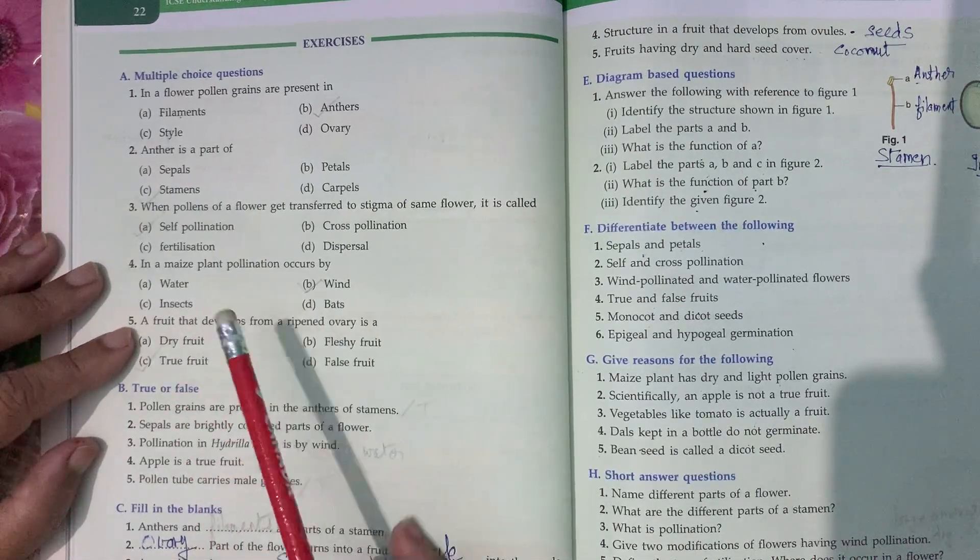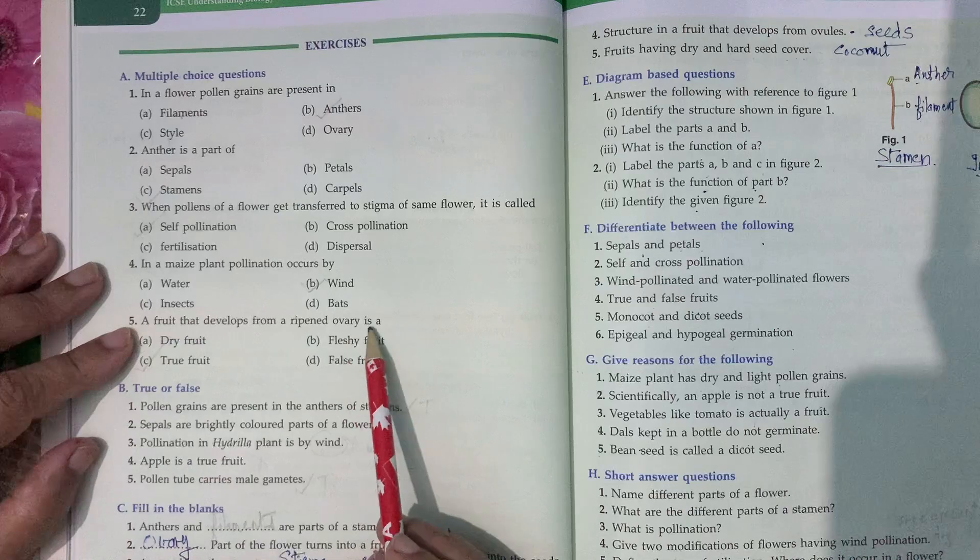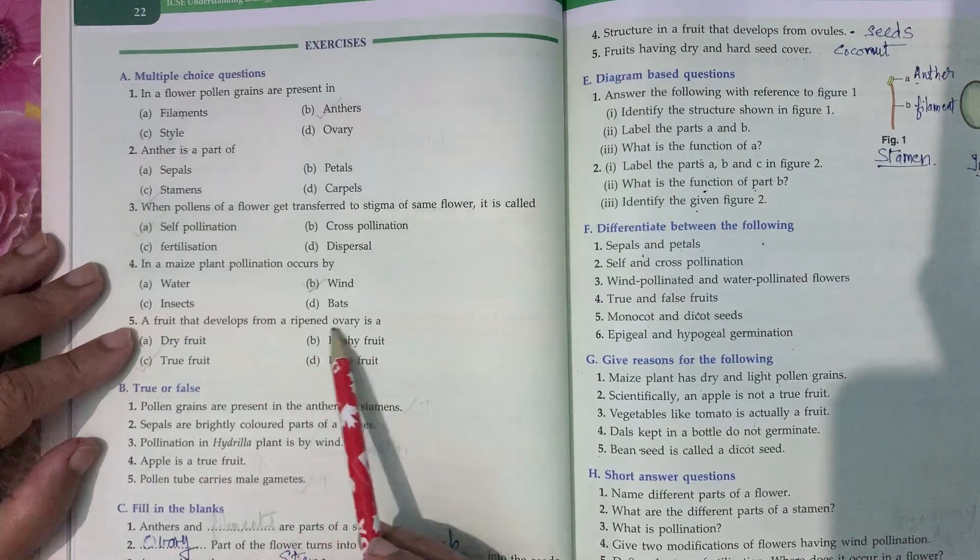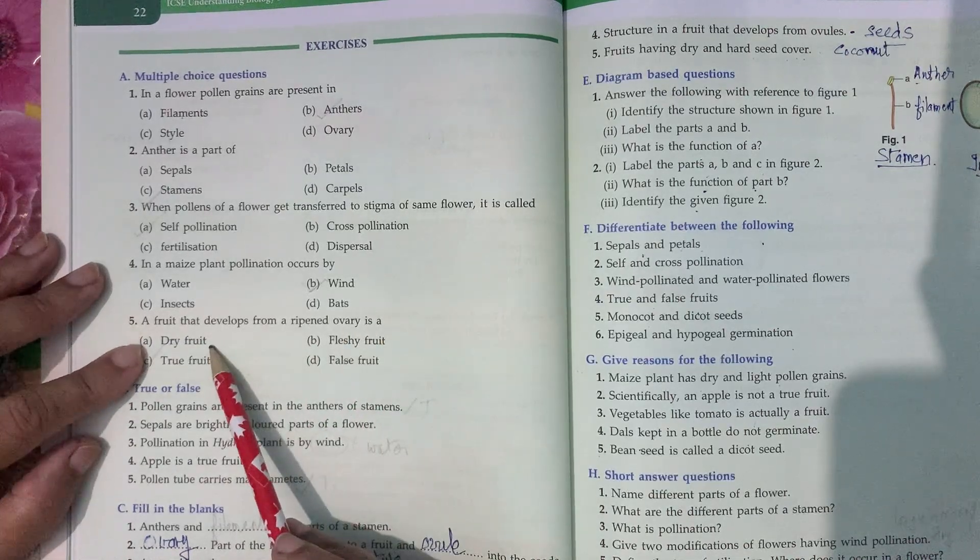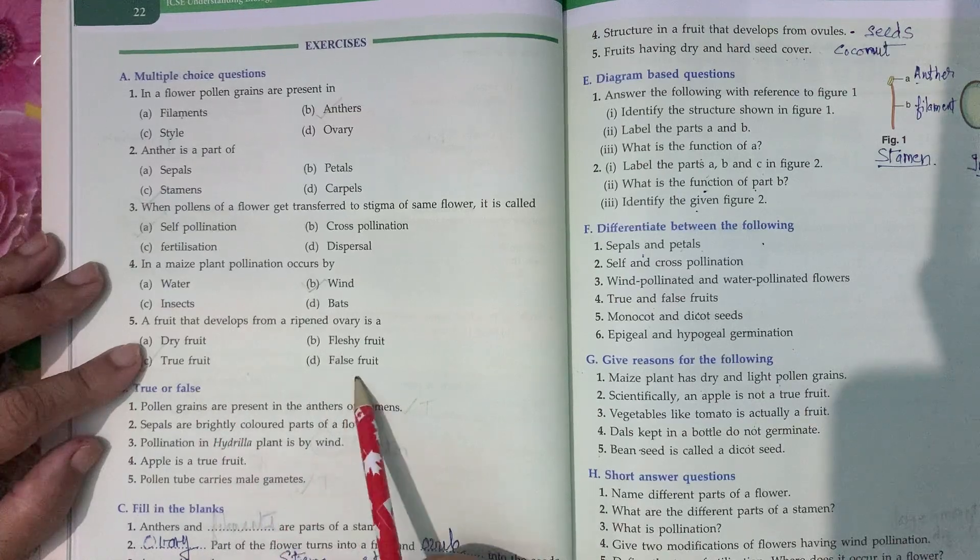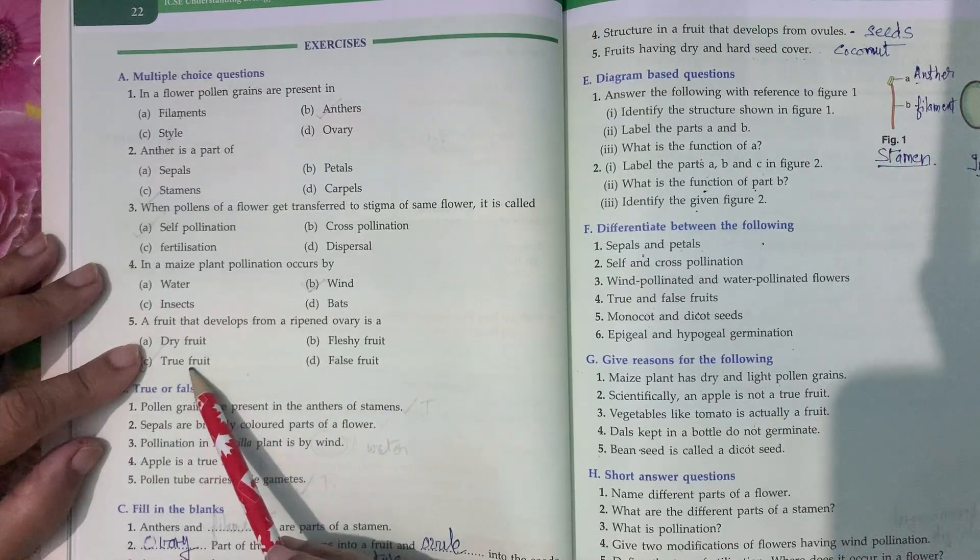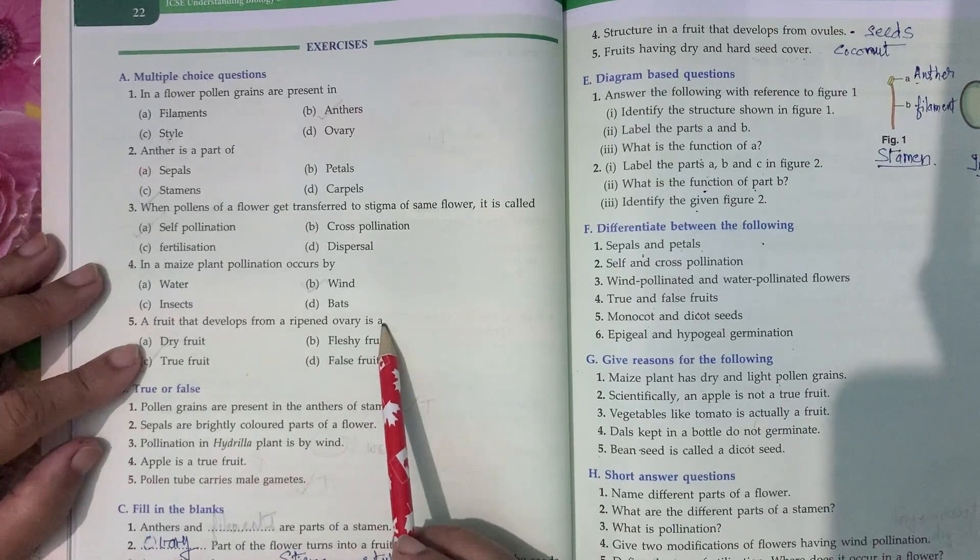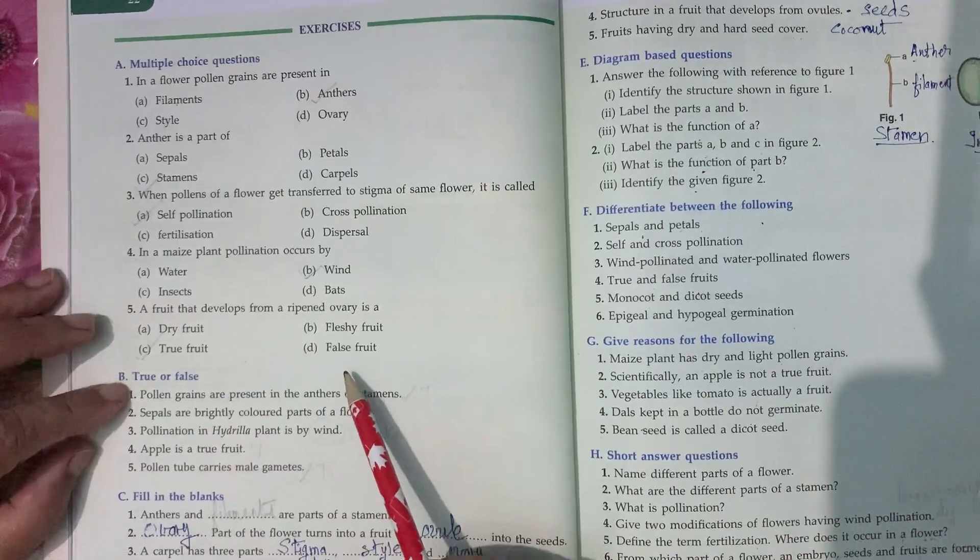A fruit that develops from a ripened ovary - dry fruit, fleshy fruit, true fruit, false fruit. What is it? It is true fruit, developed from the ripened ovary.